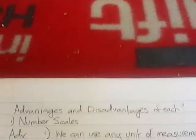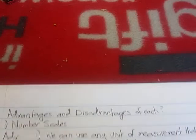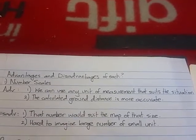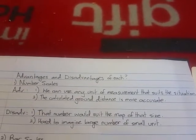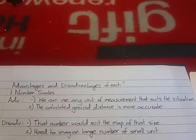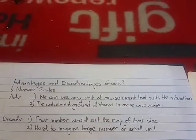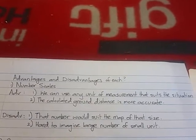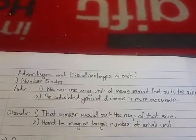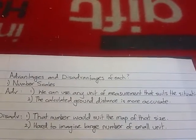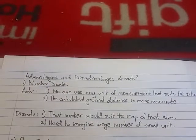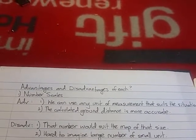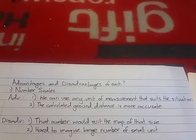Advantages and disadvantages of each. First, looking at the number scale. The advantages are: first, you can use any unit of measurement that suits the situation — centimeters, millimeters, or even meters if your map is big enough. Also, the calculated ground distance using a number scale is quite accurate. But that brings the disadvantage: the reason a number scale is so accurate is because that number is specifically situated to a map of that size.